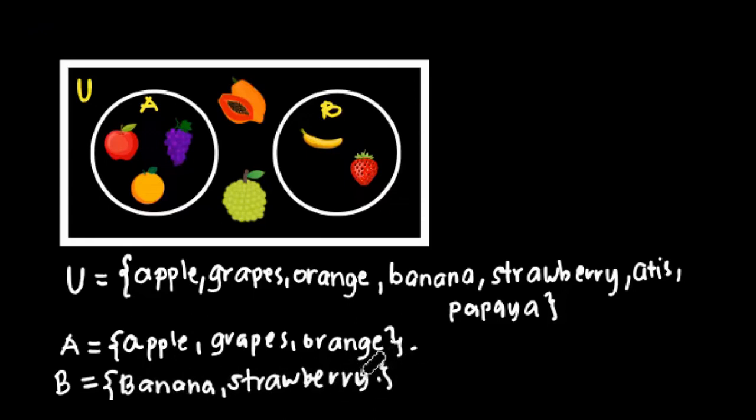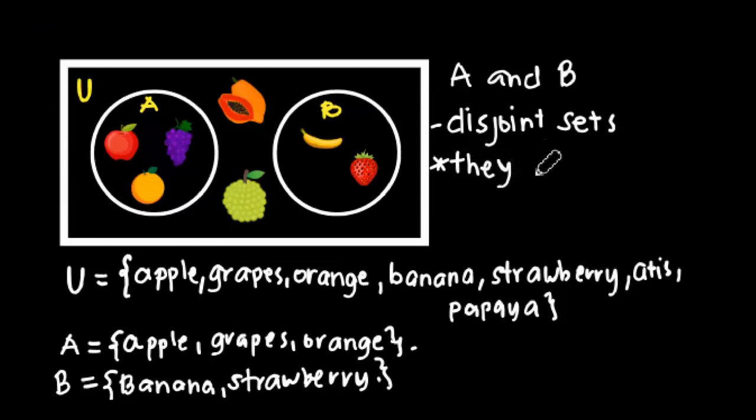Since Venn diagram is what we're discussing, there are two types of Venn diagram. One is joint sets, the other is disjoint sets. Since these two circles that represent each set are separate, we could say that A and B are disjoint sets because they have no elements in common.